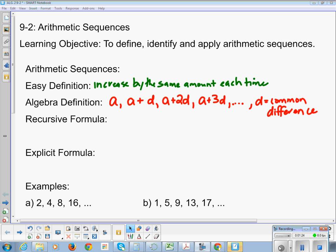Recursively, remember any recursive formula, you have to identify your first term. So A1 is A, and then to get from term to term, you go your previous term plus whatever your common difference is.